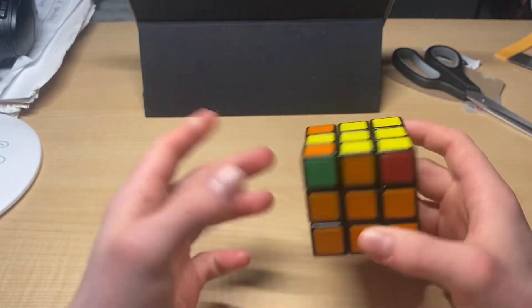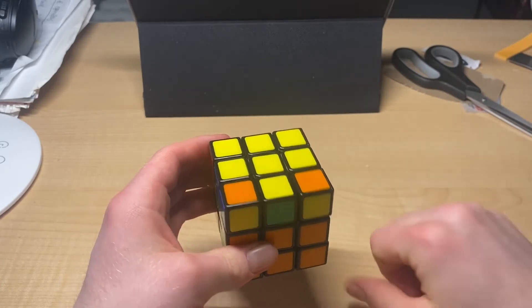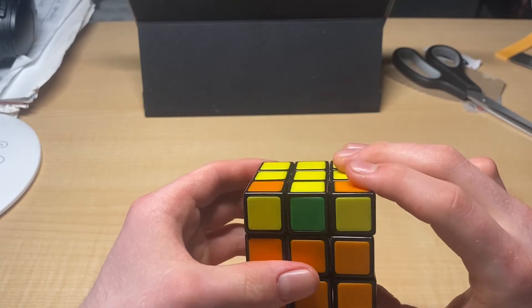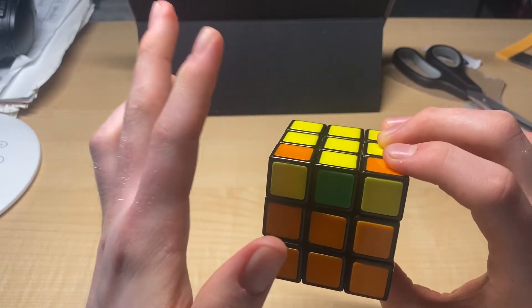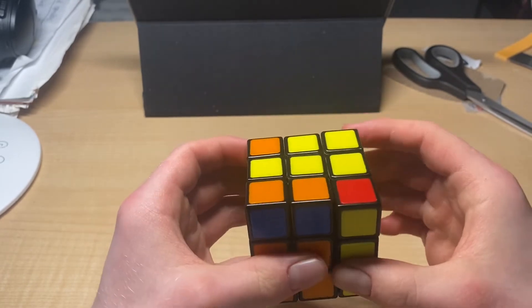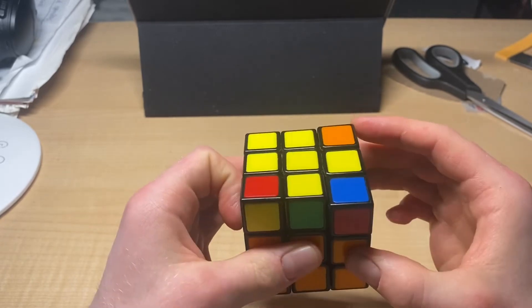And if you look at that, that did nothing. So, let's try maybe keeping the yellow facing us. Okay. So, let's do it again. We're going to do that other fish case sun. Again, with R, U, R prime, U, R, U2, R prime.